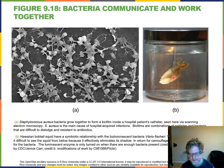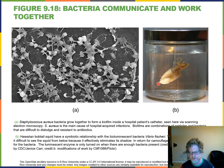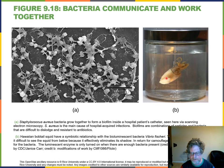Another example is a bioluminescent bacteria that lives in symbiosis with a squid. When this bacteria glows, it makes the squid harder to see from certain angles by changing its shading. The bacteria communicate with one another to decide when to glow.